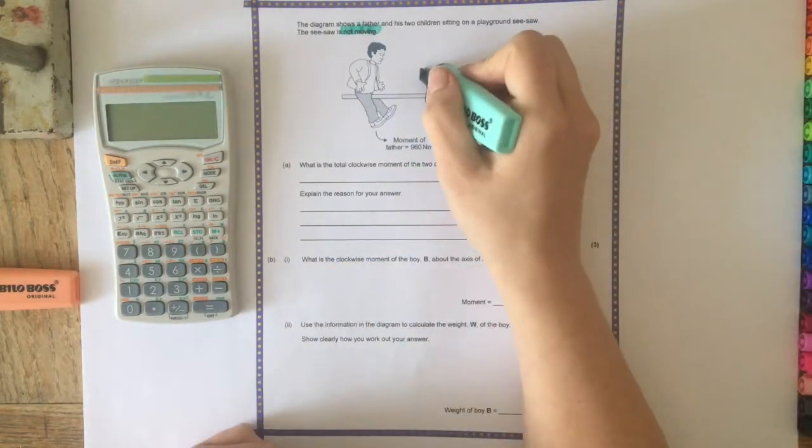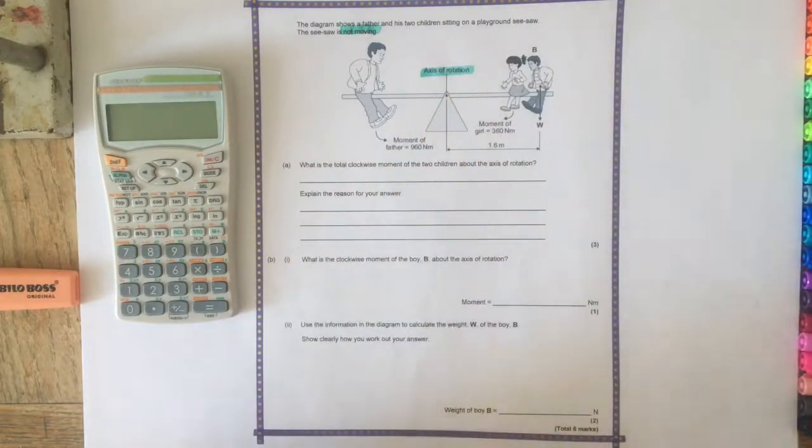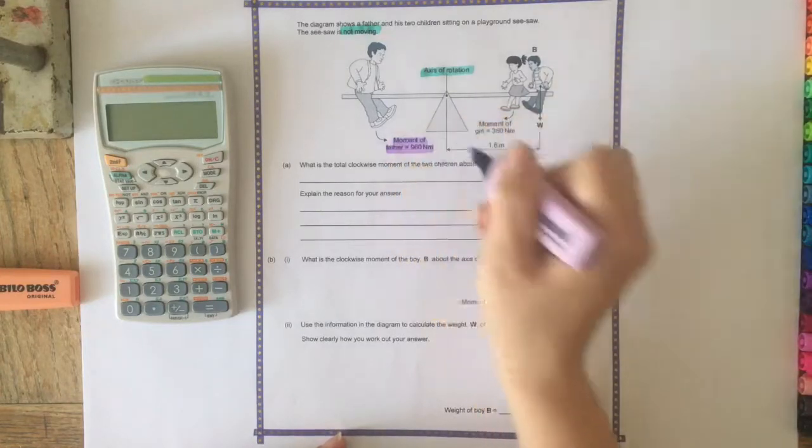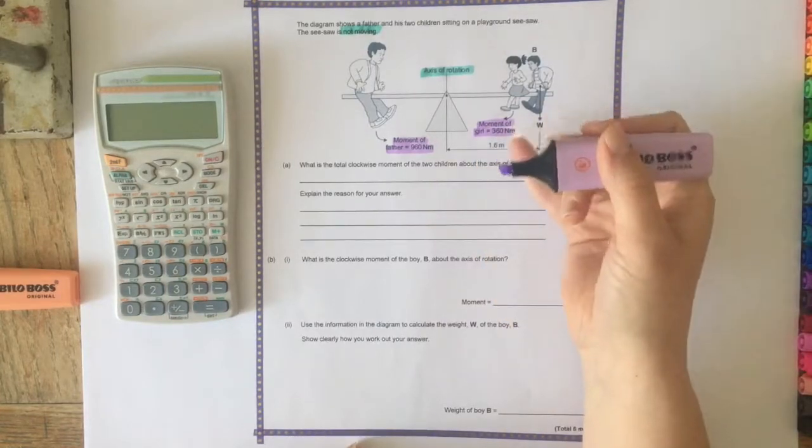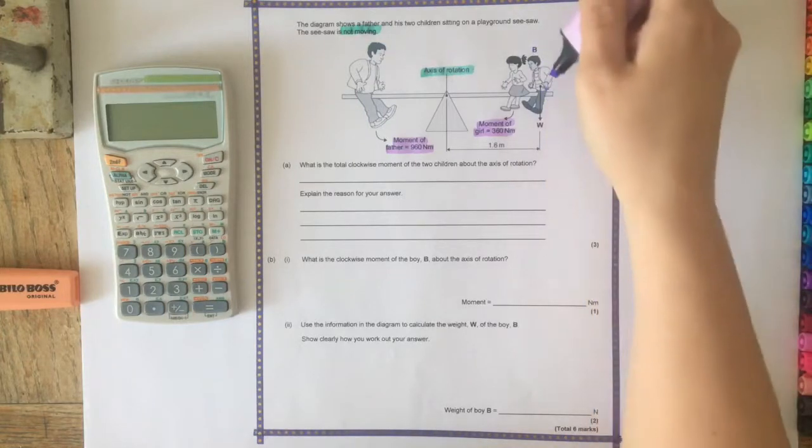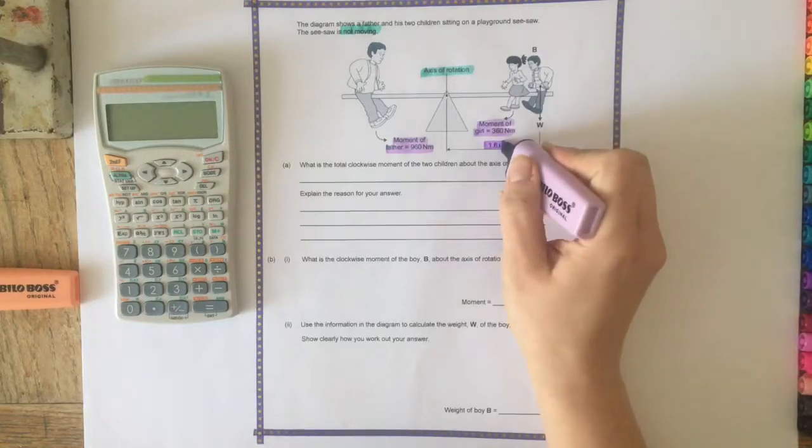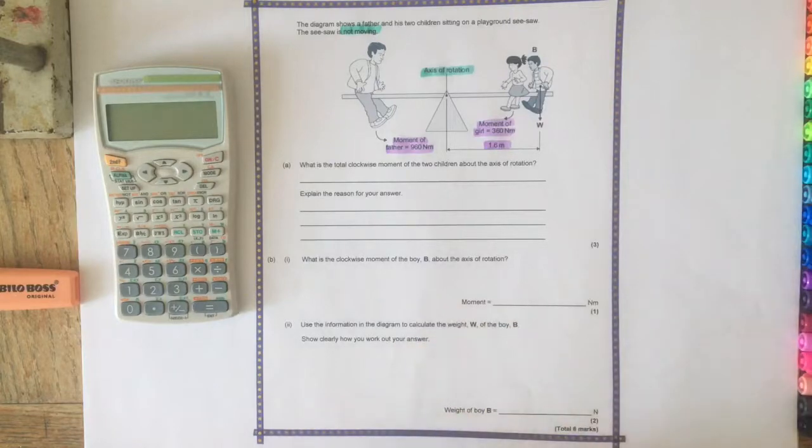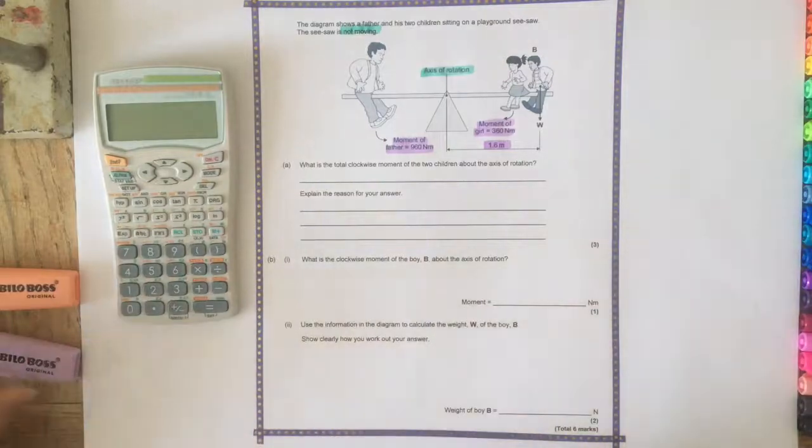So the axis of rotation is labelled - this is like the pivot point. We're given the moment of the father is 960 newton meters, the moment of the girl is 360 newton meters, and the boy labelled B, so there's a downwards arrow, so his weight labelled W. And then it tells you that the distance from him to the pivot, the axis of rotation, is 1.6 meters. So this information is going to become more useful as we go through.